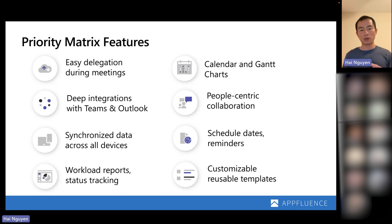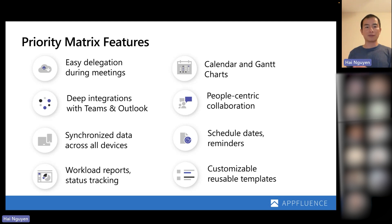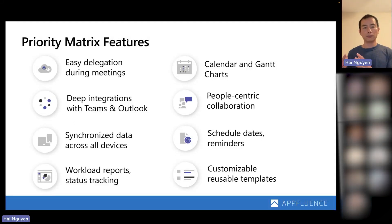Once you have all this information in Priority Matrix, it's able to provide you workload reports so you can see what your schedule looks like over the next three to six months, and if you need to assign somebody something, whether they're the right person or overloaded with work. And lastly, customizable reusable templates — once you create something in Priority Matrix and have to use it over and over again, there should be no reason for duplicate work. Priority Matrix eliminates that duplicate work and allows you to use our template system to make your projects more effective and efficient and share that across your entire team.